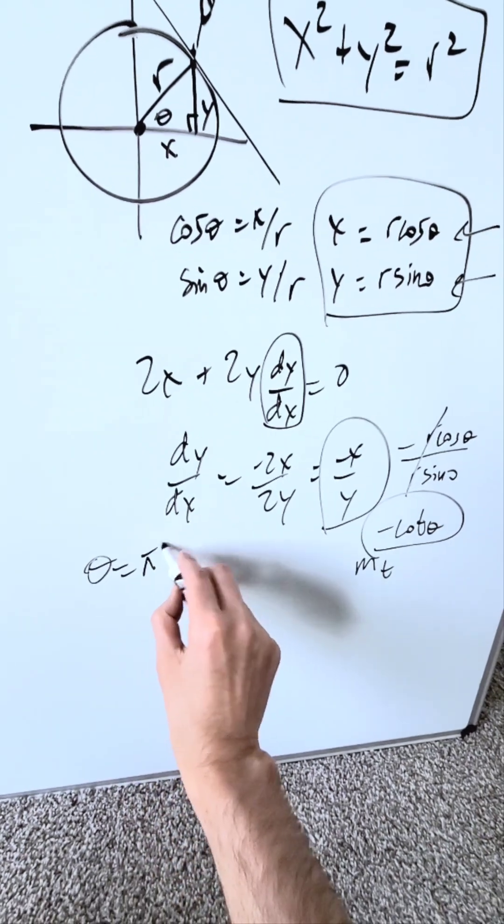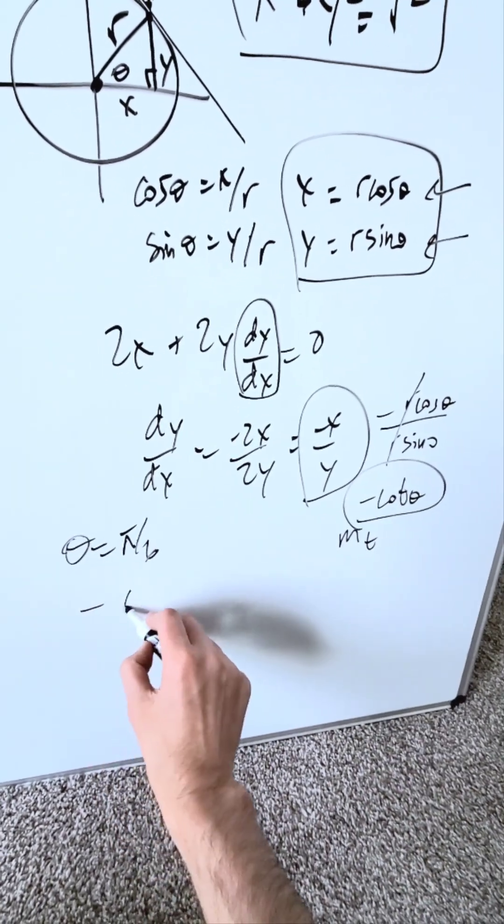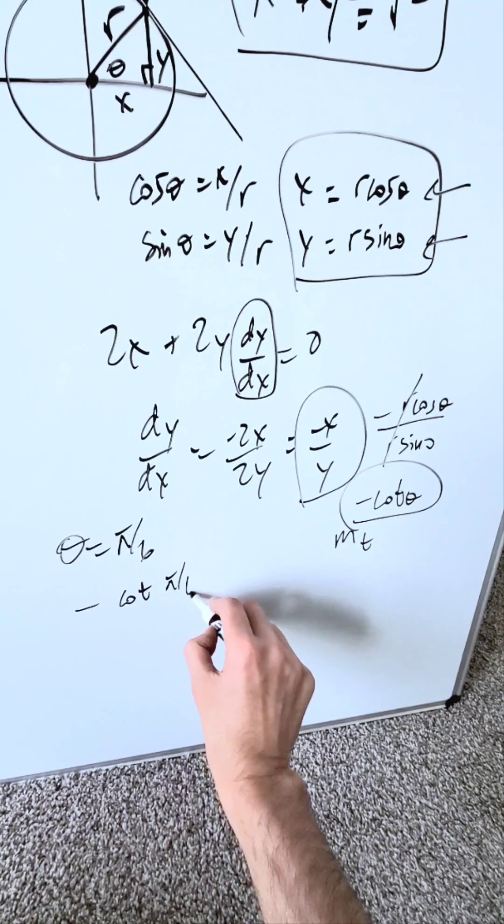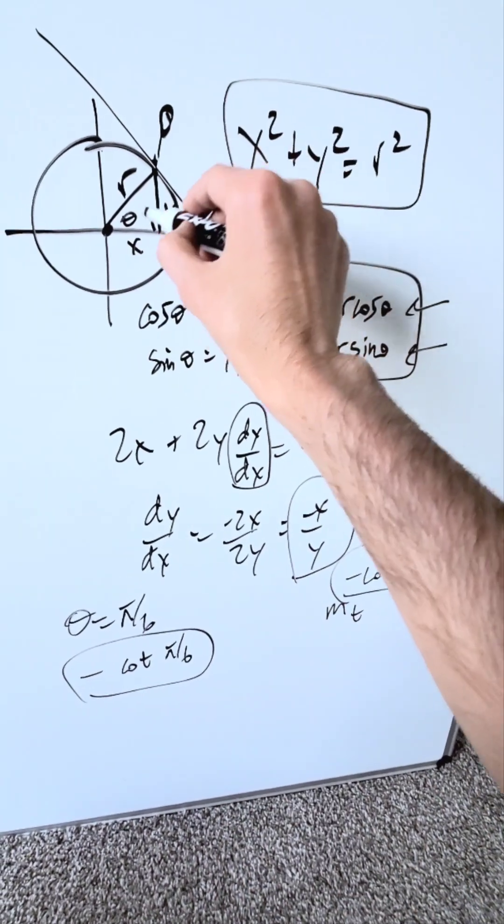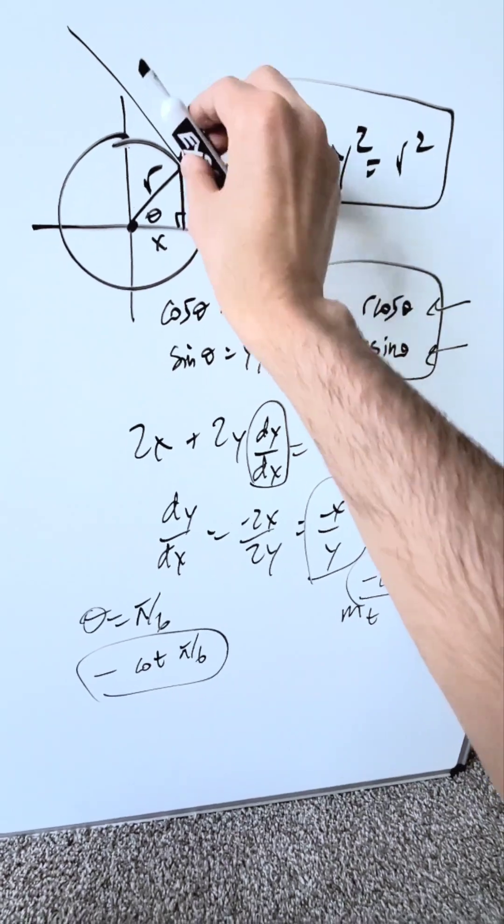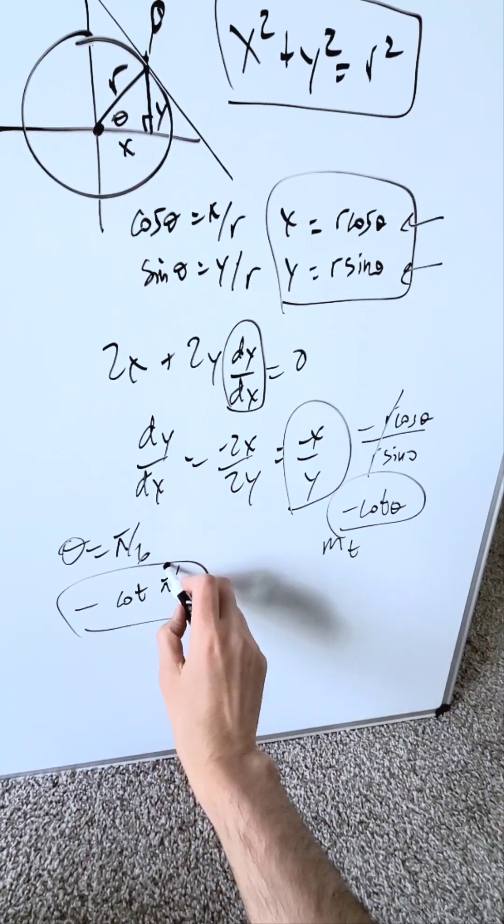Assume it's pi over 6. Then I'm running it through here. I have here a minus cotan of pi over 6. This would give me a particular slope of a tangent line. Imagine this right here is 30 degrees. What is the slope of this? I have it right over here. I'm just going to solve it out.